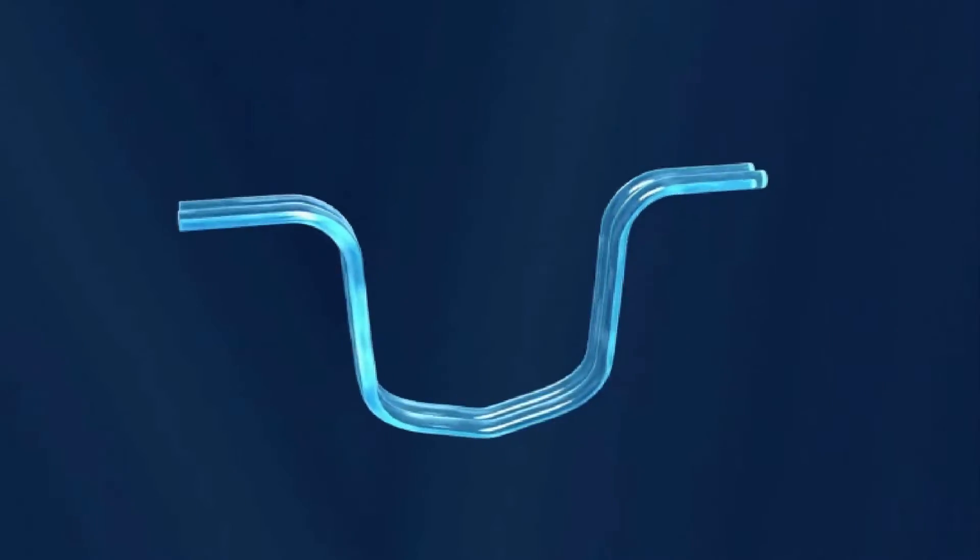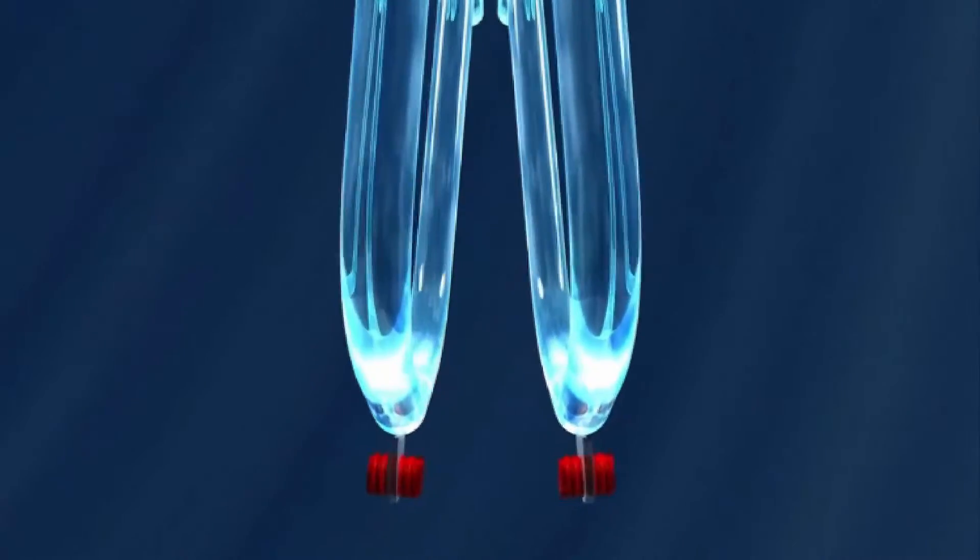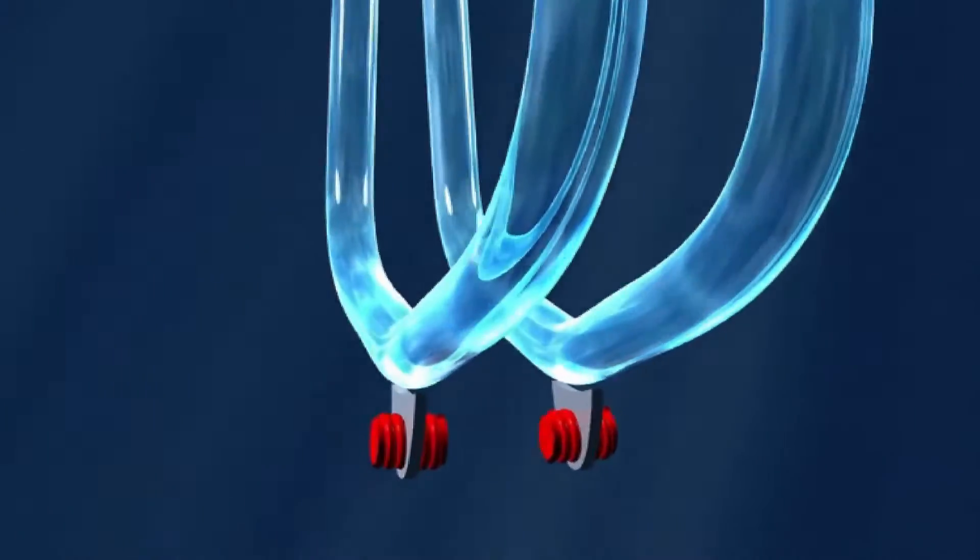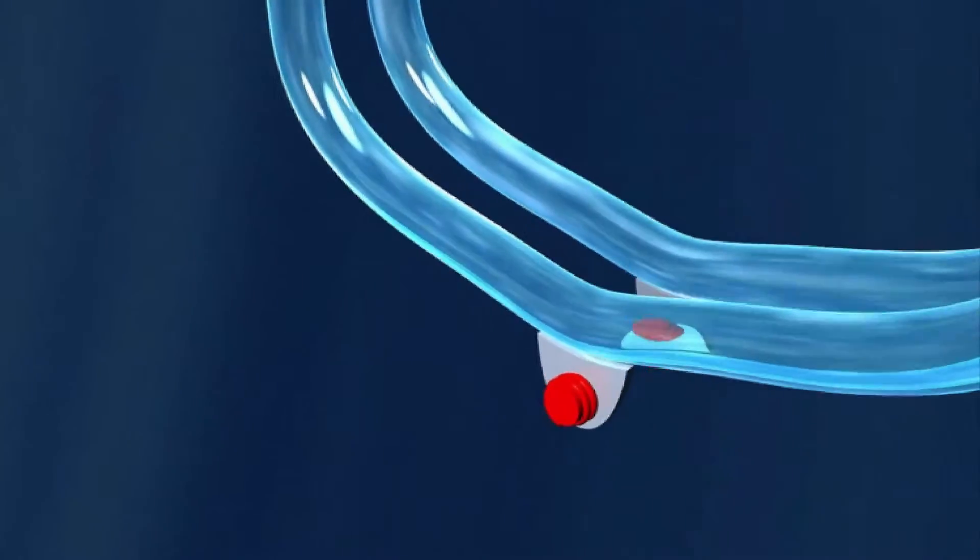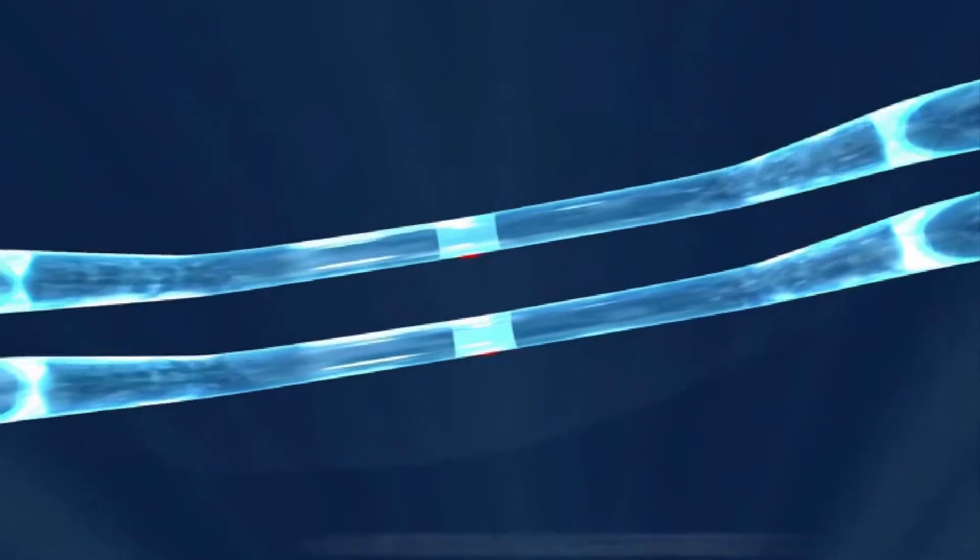For practical exploitation of this principle, it is sufficient for the two measuring tubes to perform oscillations on a small section of a circular path. This is achieved by exciting the measuring tubes with an electromagnetic exciter in its first resonance frequency.